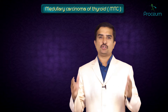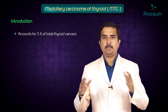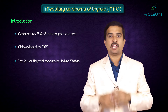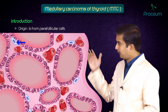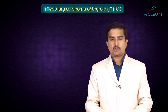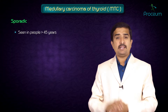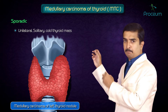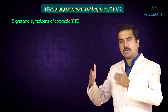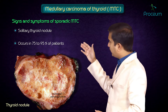Medullary carcinoma of the thyroid (MTC) accounts for approximately 5% of cases and 1 to 2% of thyroid cancers in the United States. It originates from the parafollicular C cells. There are two types: sporadic and familial. The sporadic type is seen in 80% of cases, in patients greater than 45 years of age, presenting as a unilateral solitary cold thyroid mass. The most common presentation is a solitary thyroid nodule, occurring in approximately 75 to 95% of cases.